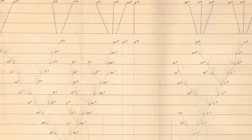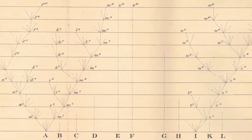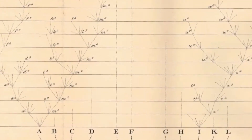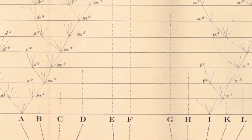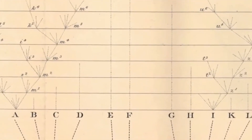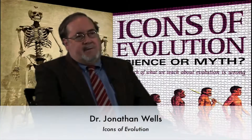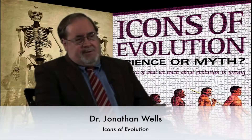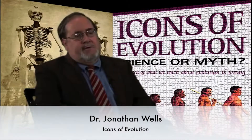When Darwin came along, he attributed homology to descent from a common ancestor — common ancestry rather than common design. And this was at the core of his theory. He considered homology some of the best evidence for his theory, these similarities in structure and position.